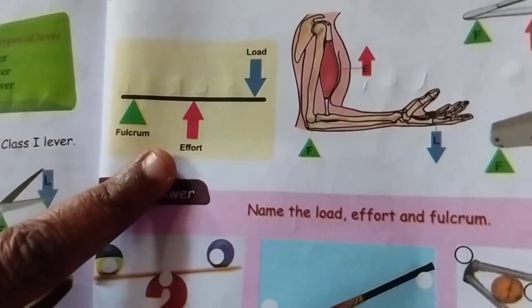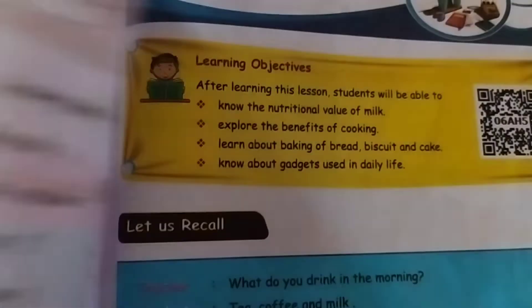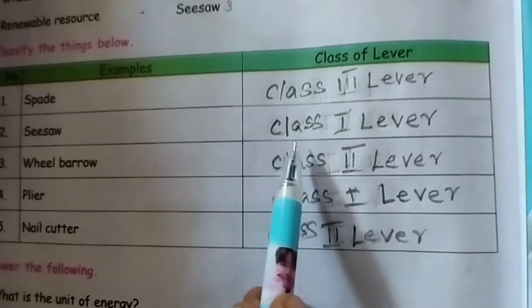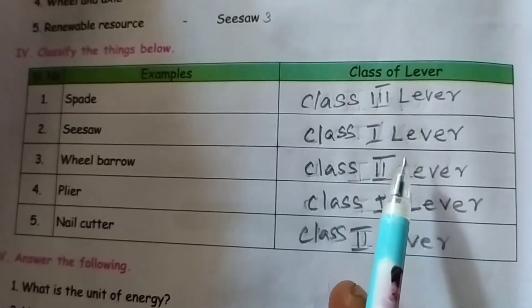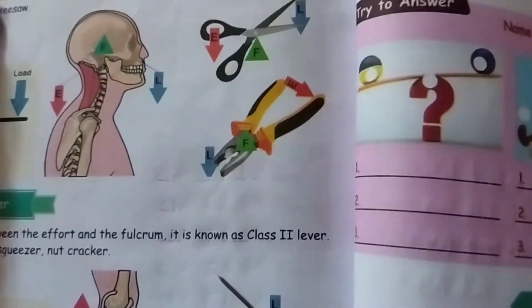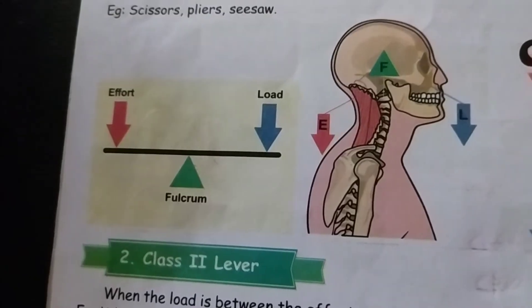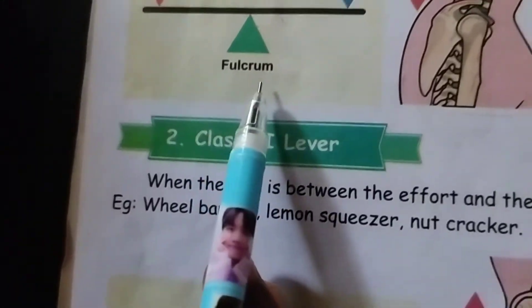Parts of a lever: fulcrum, effort, load. Class 1 lever: the fulcrum is at the end — CESA. First lever is a Class 1 lever, where the fulcrum is at the end.